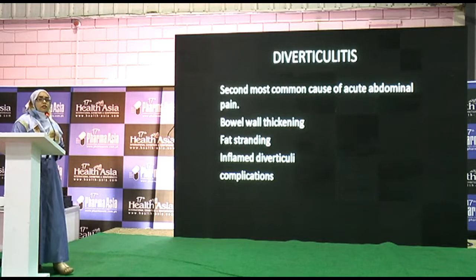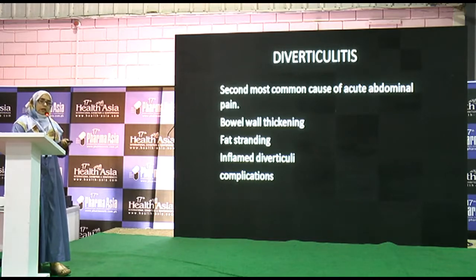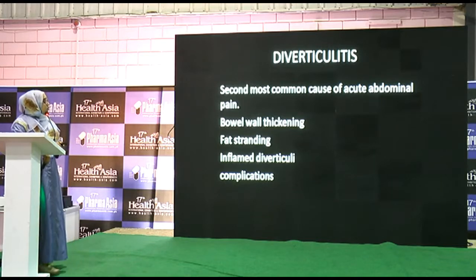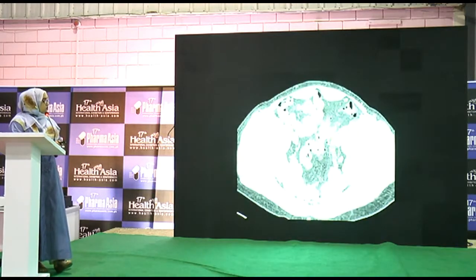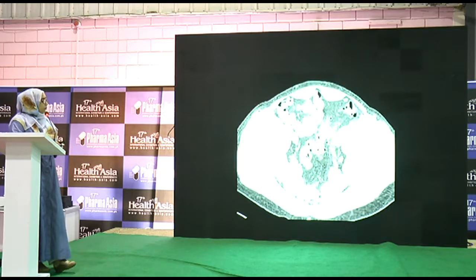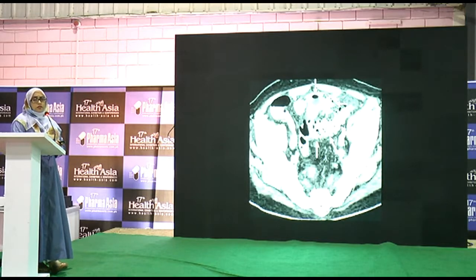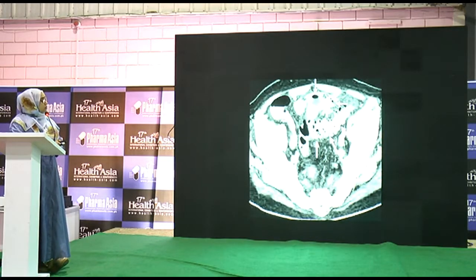History and location of pain are very important. Right iliac fossa pain — think appendicitis. Left iliac fossa pain — think diverticulitis, the second most common cause of acute abdominal pain. If ultrasound shows nothing, CT is requested. On CT you can see thickened sigmoid colon with diverticular outpouchings and pericolonic fat stranding. CT is also done to assess complications; in one case there was a macro-perforation with an abscess cavity containing an air-fluid level, thickened sigmoid colon, and pericolonic fat stranding.